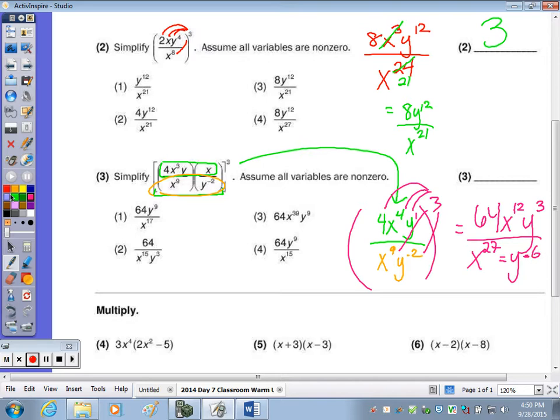subtract the exponents, so sixty-four divided by the one is sixty-four, x to the twelve minus twenty-seven is negative fifteen, y to the three minus negative six. When you subtract a negative, it changes to positive,